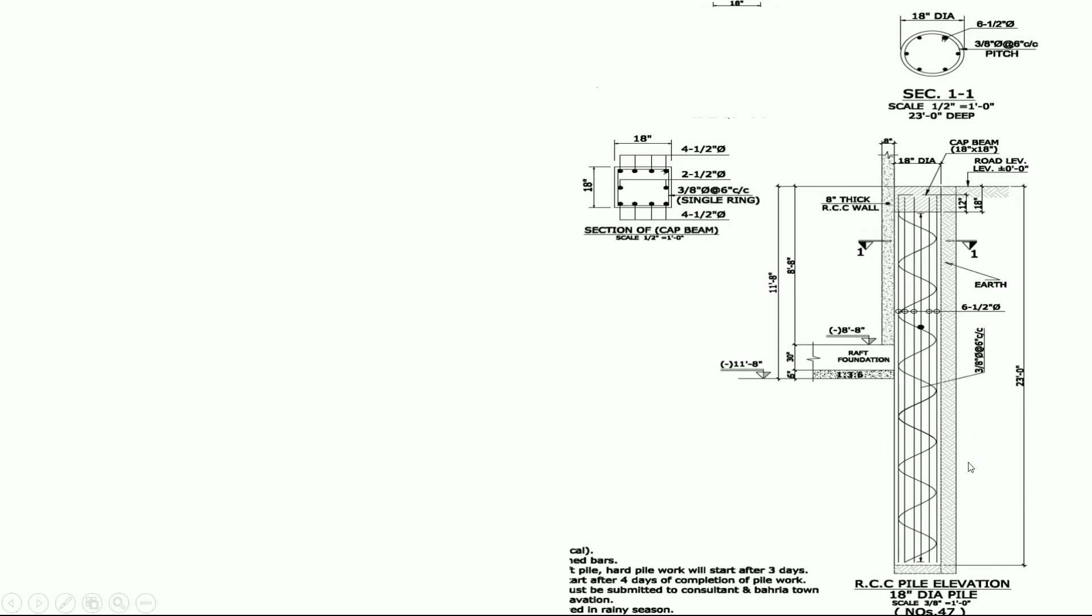In this video we have a drawing of building pile. Here is pile number 47 and the pile height is 23 feet. 3/8 inch is the diameter of the spiral at 6 inch center to center. Here is the pile. We subtract this gap from 23 feet. Here is a top section: vertical bar, 6 bars, half inch diameter of the vertical bar, and the pile diameter is 18 inches.